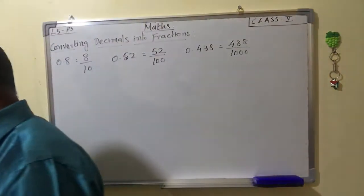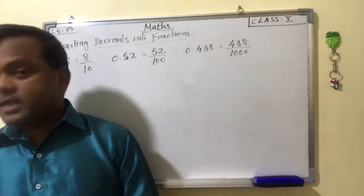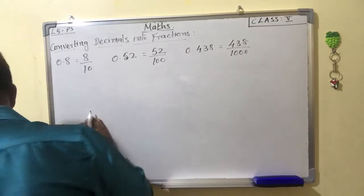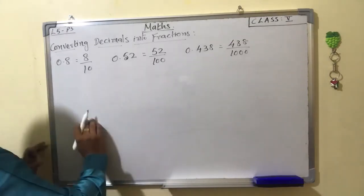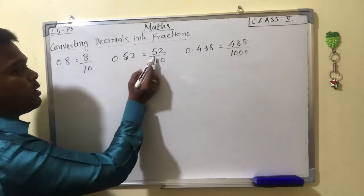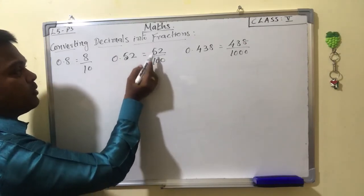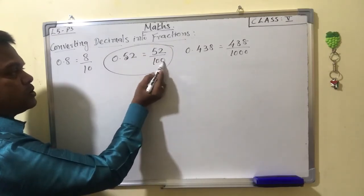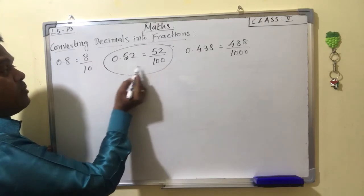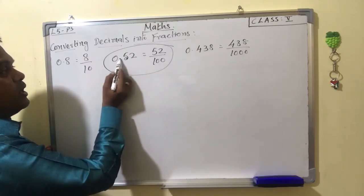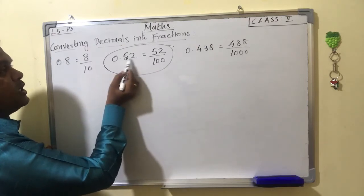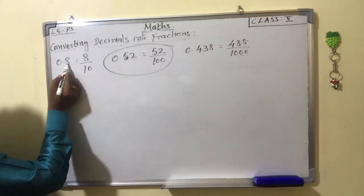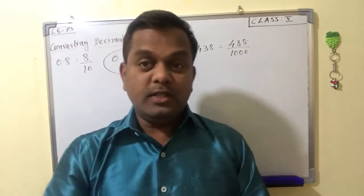One more rule: the number of zeros in the denominator of the fraction is the same as the number of decimal places in the decimal number. For example, 52 by 100 — two zeros in the denominator, two decimal places in 0.52. 438 by 1000 — three zeros, three decimal places. 8 by 10 — one zero, one decimal place.